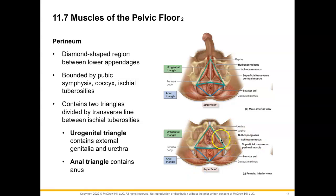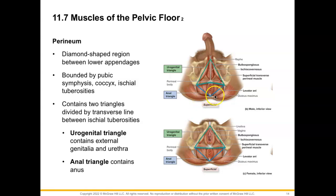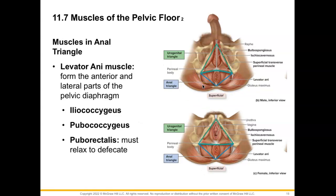The top triangle is called our urogenital triangle and this contains the external genitalia and the urethra in both males and females. The anal triangle, shown here in blue, contains the anus. So first let's talk about some of the muscles in the anal triangle.